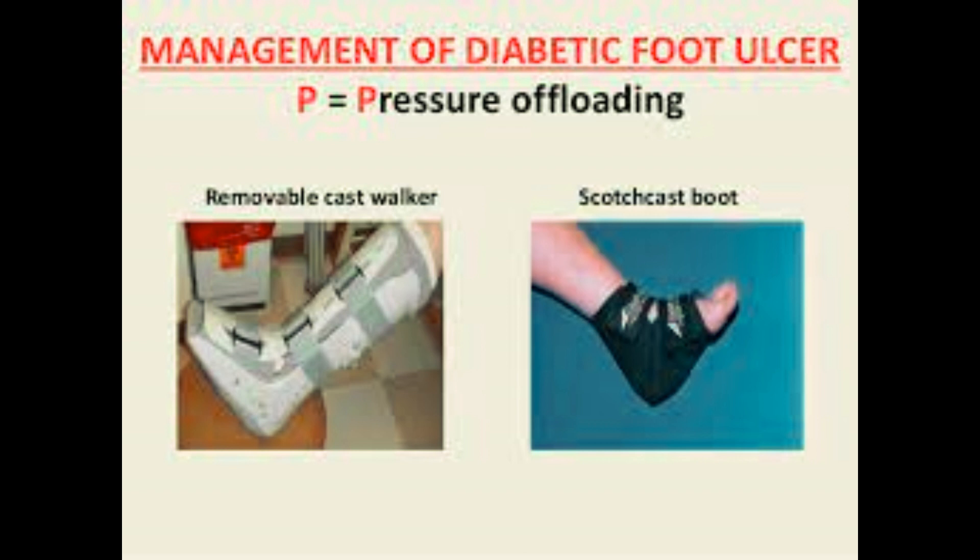2. Offloading pressure. Offloading pressure from the ulcer site helps relieve pressure on the affected area, allowing the wound to heal. This may involve using specialized footwear, orthotic devices, or total contact casts to redistribute pressure away from the ulcer.